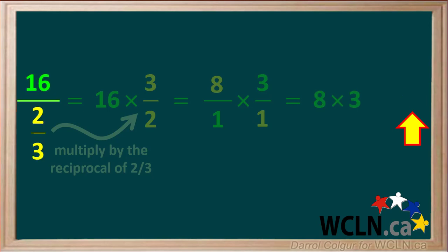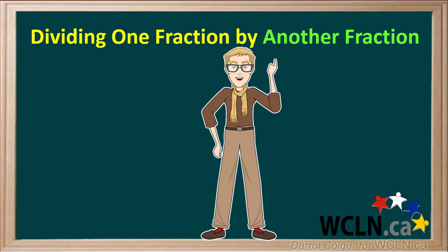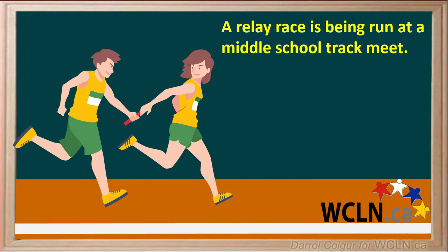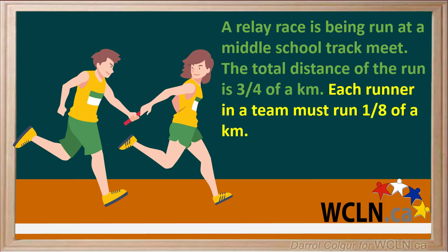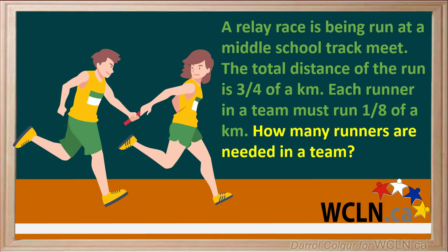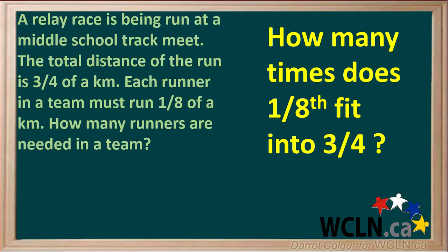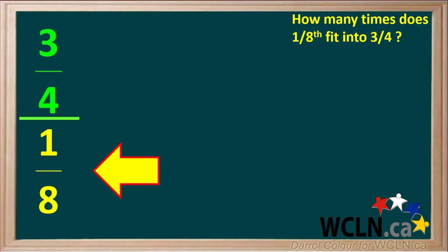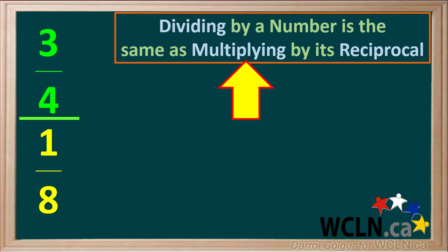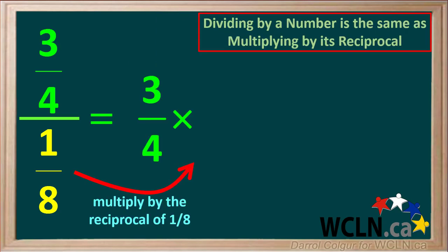We'll summarize by stating that 16 divided by 2 thirds is equal to 24. Sometimes we need to divide one fraction by another fraction. A relay race is being run at a middle school track meet. The total distance of the run is 3 quarters of a kilometer, and each runner in a team must run 1 eighth of a kilometer. The question is, how many runners are needed on each team? To answer this, we need to know how many times 1 eighth will go into the total distance of 3 quarters. So we need to take the fraction 3 quarters and divide it by the fraction 1 eighth. Remember, dividing by a number is the same as multiplying by its reciprocal. So we multiply 3 quarters by the reciprocal of 1 eighth, which is 8 over 1.